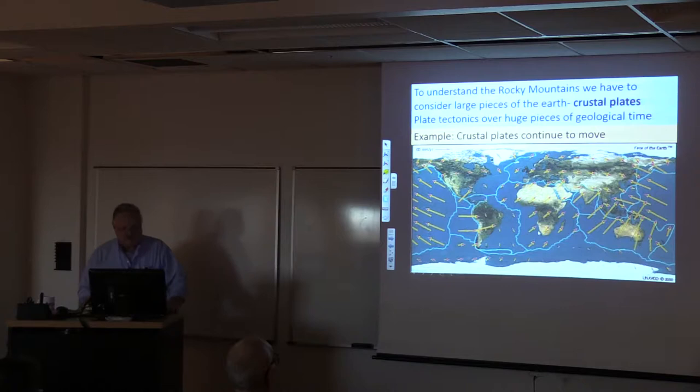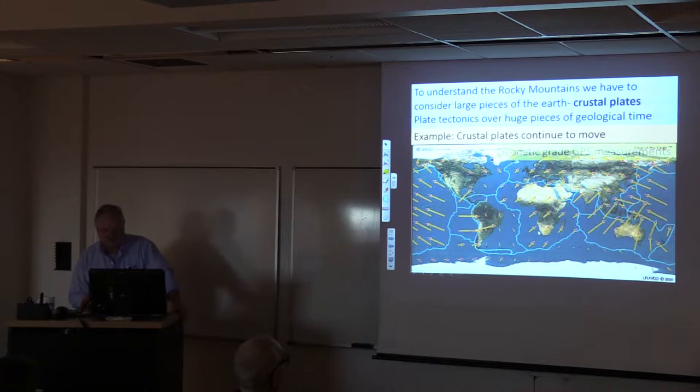To understand the Rocky Mountains, we have to consider very large pieces of the earth. These are crustal plates. With high-grade GPS systems, you can determine that some continents are moving in this direction. North America is moving that way. This oceanic plate is moving there. Little vector is 50 millimeters per year. These continents are actively moving even though we don't sense it. These are called geodetic-grade GPS measurements.